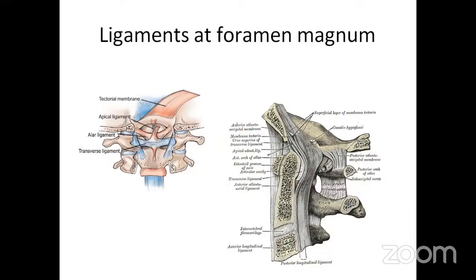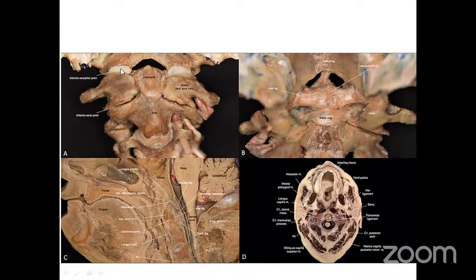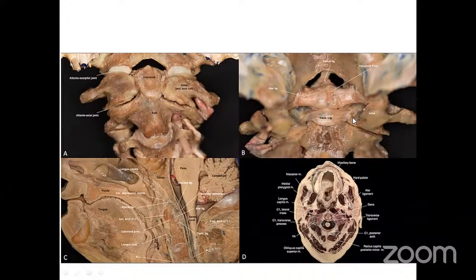All these ligaments form the walls of the foramen magnum. In a cadaveric coronal dissection, we can see the odontoid process of axis, the body of atlas, the C1 lateral masses, the occiput, and the atlantooccipital joint formed by the occipital condyles and superior articular facet of C1. The transverse ligament keeps the odontoid in check, while the alar ligament and apical ligament run from the odontoid tip to the occiput — visible in both coronal and sagittal views.